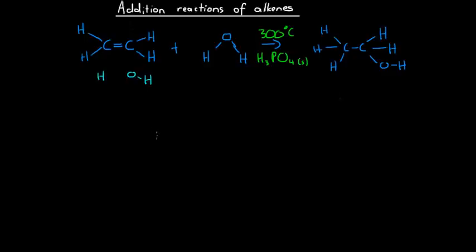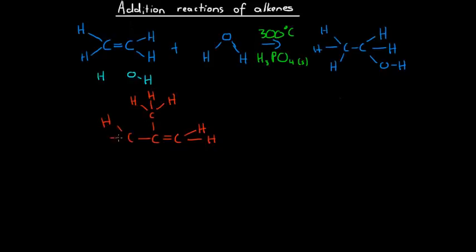We're going to start with methylpropene. We have to remember when drawing these structures that each carbon only forms four bonds. Therefore this carbon only has two hydrogens coming off it, and this carbon will have no hydrogens because it has already formed four bonds. This is methylpropene — we don't need any numbering because there's no ambiguity. No matter how we number this molecule it will always be the same, even if we move the double bond and the methyl group.